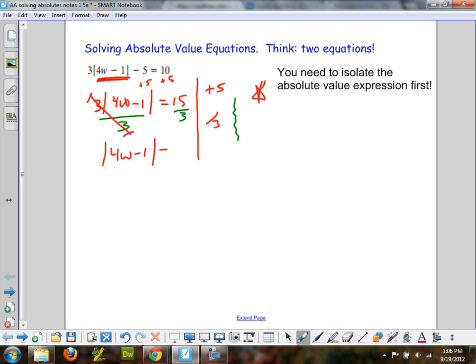So, that leaves just the absolute value expression. We've got it equal 5 over here. We have isolated the absolute value. We are now going to split into two equations. This is why.